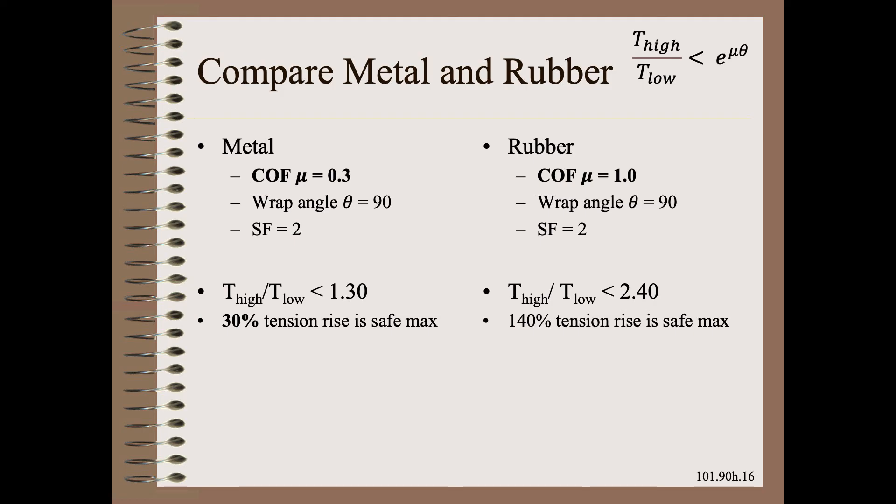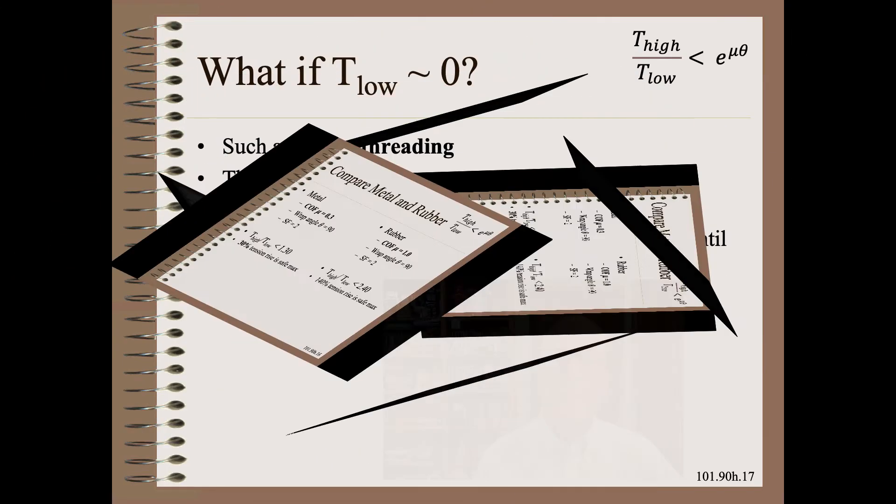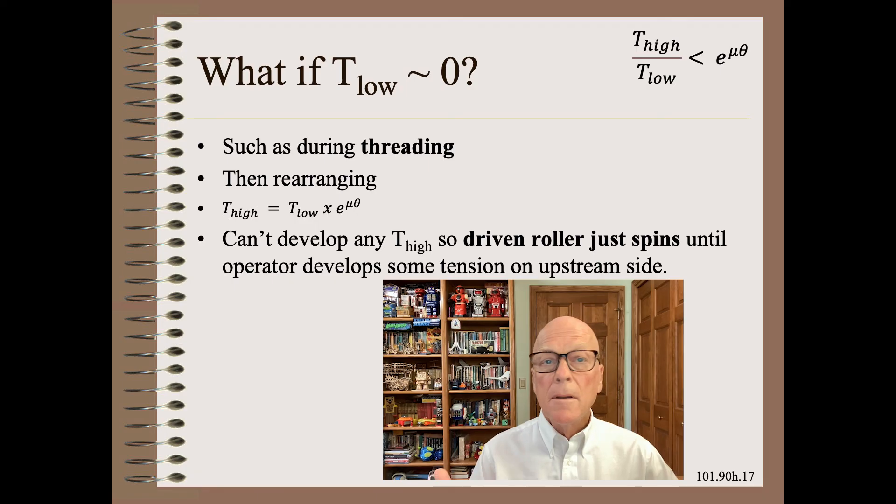Here we show much of a traction performance boost that you can get by rubber covering. Instead of a 30% tension rise, more than 130% can be sustained with a generous safety factor. The traction calculation also teaches us why a driven roller will just spin out on the web during threading, if there is not some applied tension.